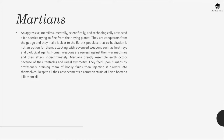The Martians: An aggressive, merciless, and mentally, scientifically and technologically advanced alien species trying to flee from their dying planet. They are conquerors from the get-go, making it clear that cohabitation is not an option. Attacking with advanced weapons such as heat rays and biological agents, human weapons are useless against their war machines and they attack indiscriminately. Martians greatly resemble Earth's octopi because of their tentacles and radial symmetry. They feed upon humans by grotesquely draining them of bodily fluids and injecting it directly into themselves. Despite all their advancements, a common strain of Earth bacteria kills them all.